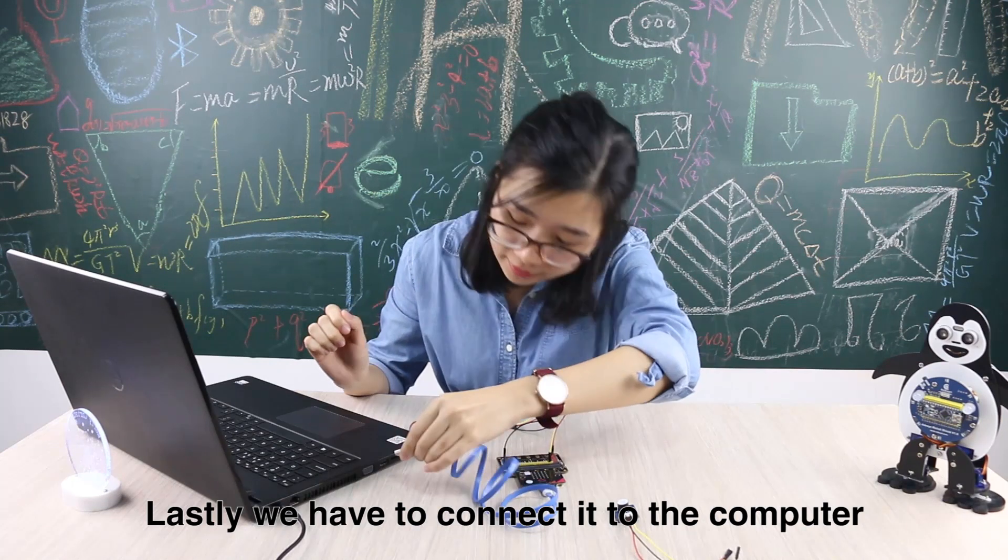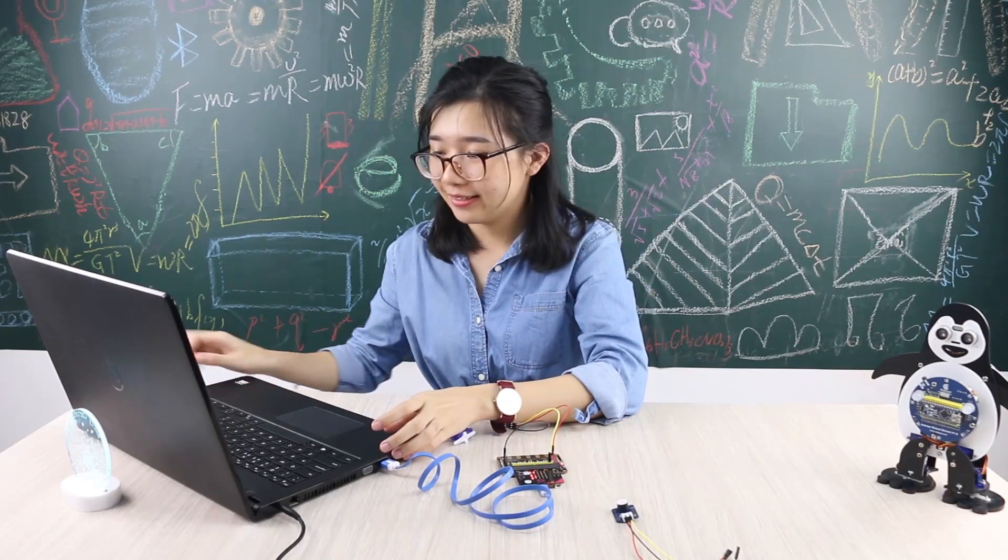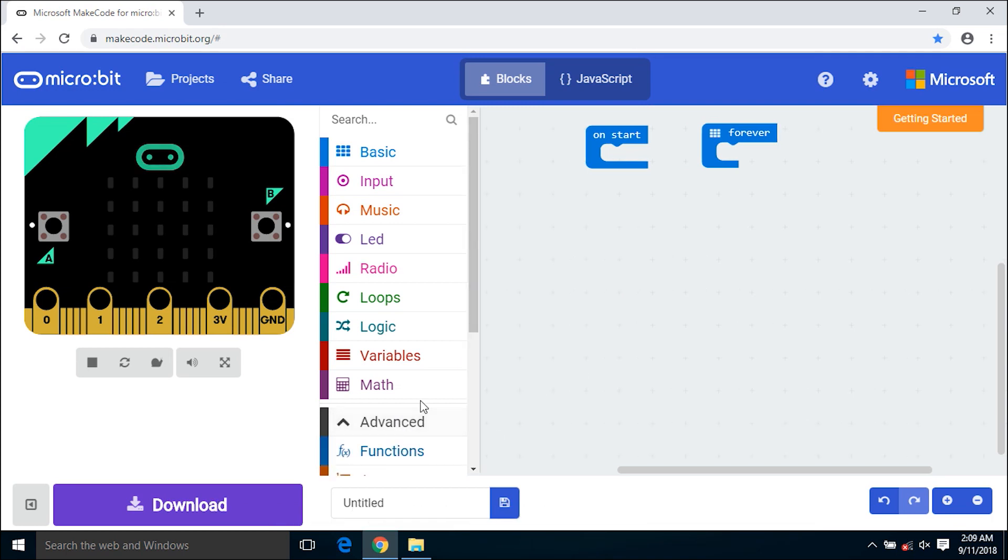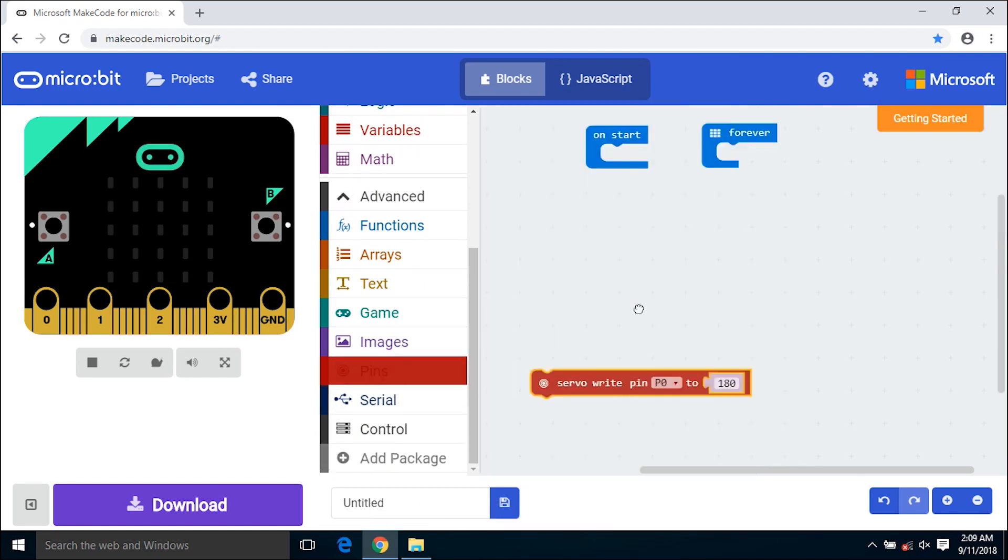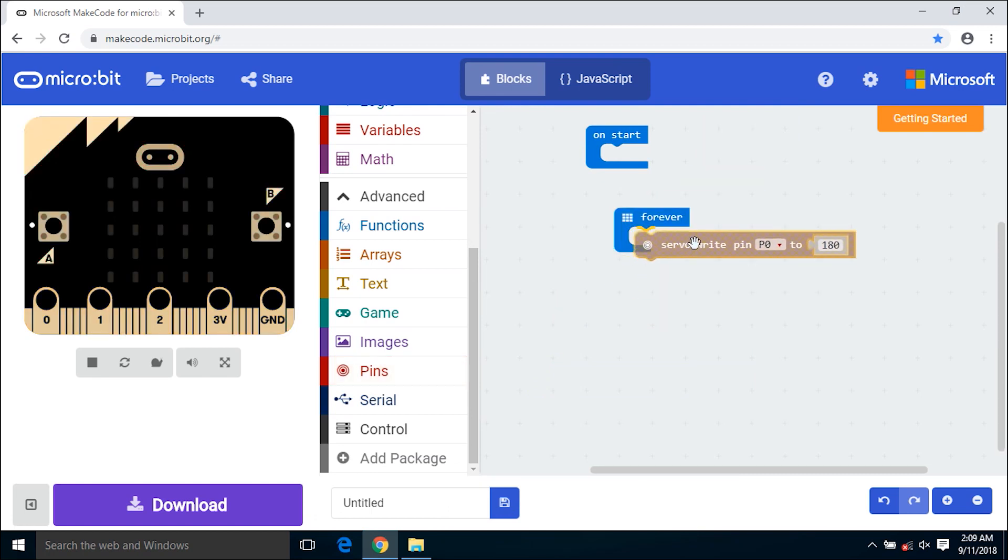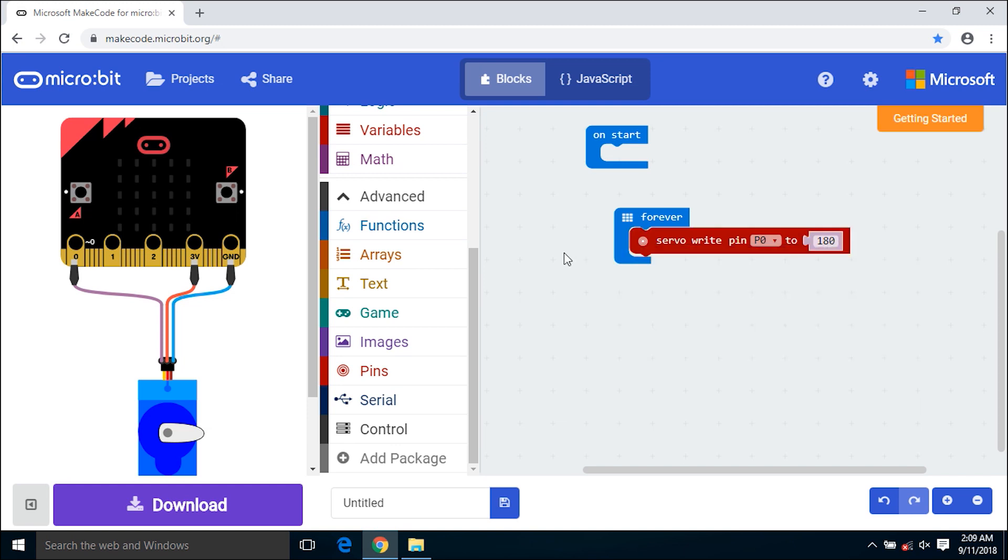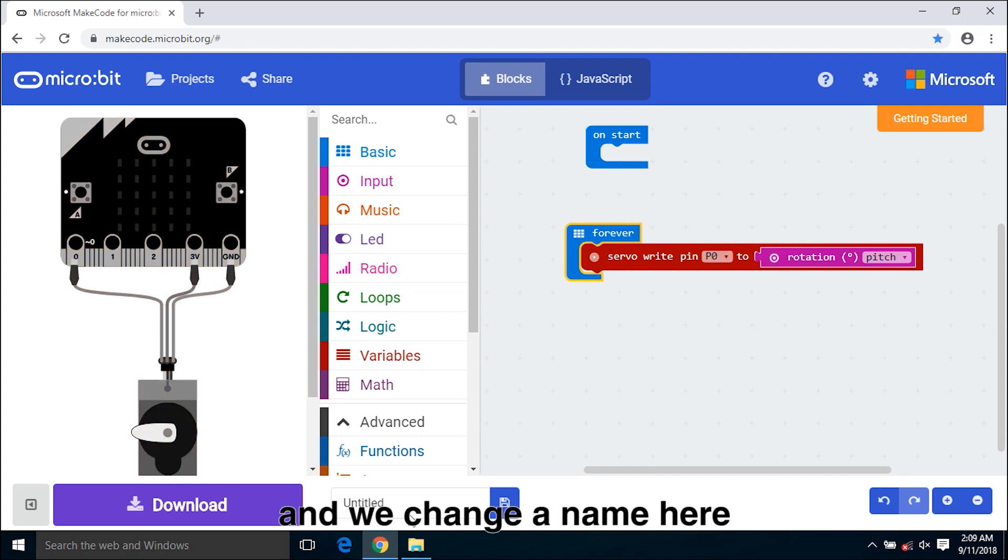Firstly we have to connect it to the computer and now let's begin. We have the online programming tool. Click advanced, pins, find out servo write pin, leave it as P0 by default. Click input, more, drag rotation here.